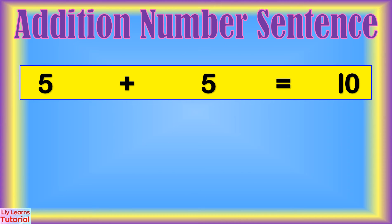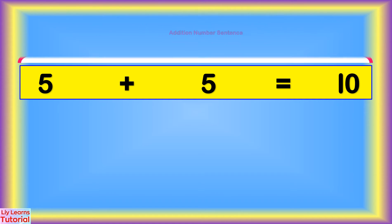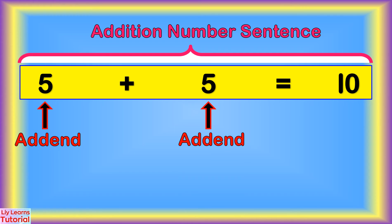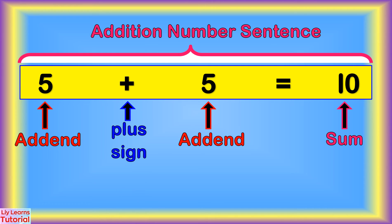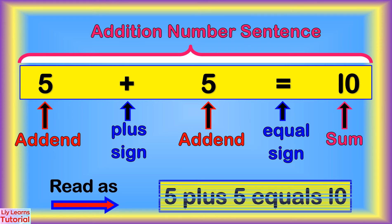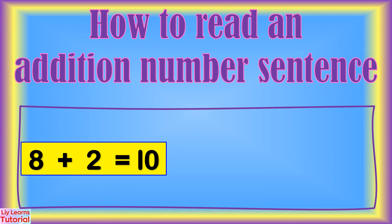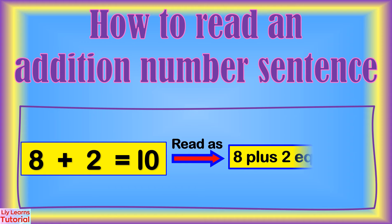This is an addition number sentence. 5 and 5 are the addends. 10 is the sum. This is the plus sign, and this is the equal sign. We can read this as 5 plus 5 equals 10. How do we read an addition number sentence? The example below is read as 8 plus 2 equals 10.